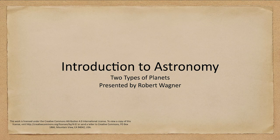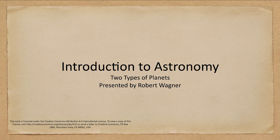Greetings and welcome to the introduction to astronomy. In this lecture we are going to talk about the two different types of planets that we find in the solar system. We can very easily divide our solar system into two types of planets, and in the future we will be looking at how this applies to other solar systems.